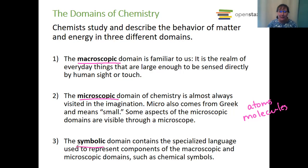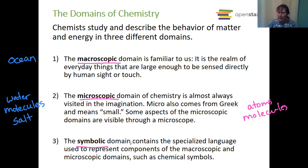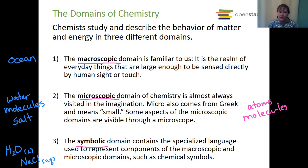The symbolic domain contains a specialized language. For example: macroscopic — the ocean; microscopic — water molecules and salt; and the symbolic domain would say the ocean has H₂O (liquid) and NaCl (aqueous). So liquid water and dissolved salt — that's kind of how those three things work together.